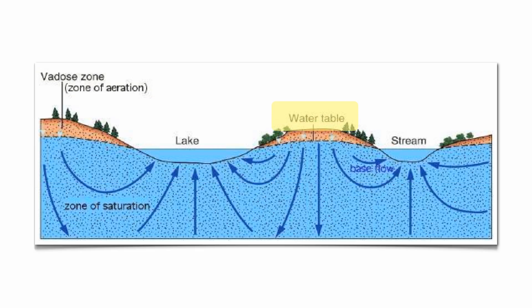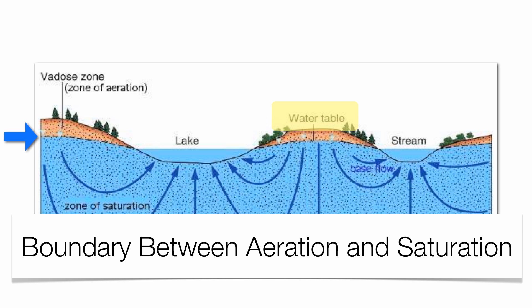The boundary between the zone of aeration and the zone of saturation is what we call the water table, identified by a dotted line. The two zones change shape based on the amount of precipitation. Lakes and streams actually represent the water table at the surface, giving you an idea of how high the water table is underground. If lakes and streams are really high, you have a high water table; if they're really low, you have a very low water table.